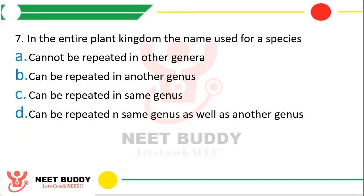Question 17. In the entire plant kingdom, the name used for a species: can it be repeated in other genera? The correct answer is Option B, it can be repeated in another genus.